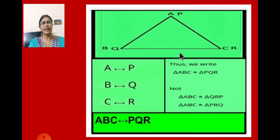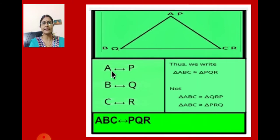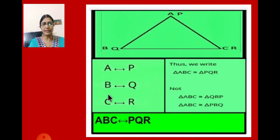Now, how do we write this correspondence? This is the symbol for corresponding. A is corresponding to P — it will be written like this. Same way, B is corresponding to Q, so it will be written in this way. And C is corresponding to R. We can write this together also: A, B, C is corresponding to PQR.